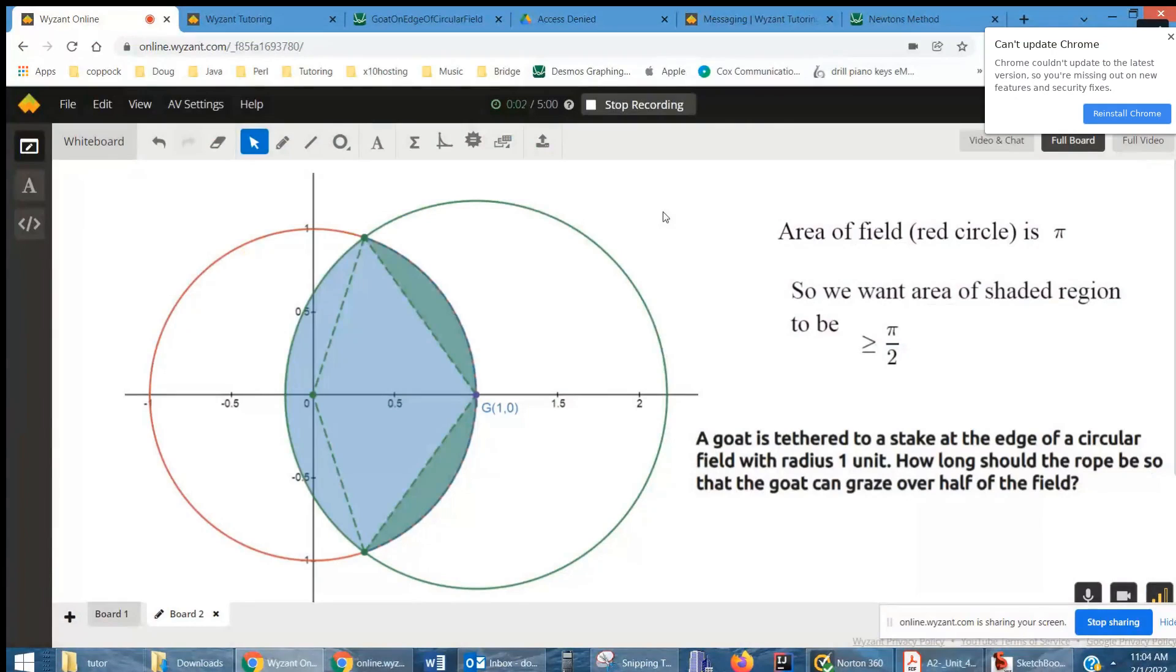Okay, my plan is to only give you some ideas on how you might solve this problem. We've got this goat tethered at the edge of a circular field with a radius of one unit. That's this red circle right here, the field with radius of one. And here's the goat on the edge of that circle. He's going to be tethered to a rope, and we want to know how long that rope has got to be so that he can graze at least half the field.